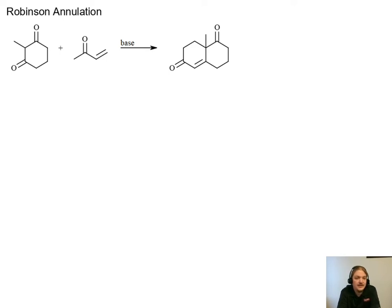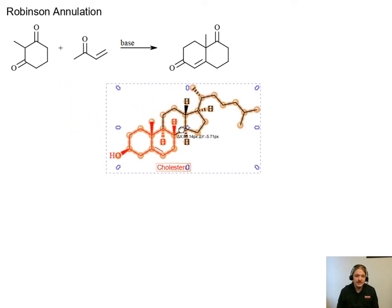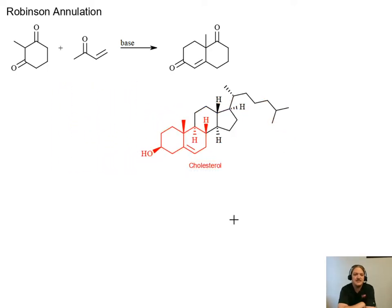This is a reaction that combines an aldol condensation and a Michael addition reaction. And it is used typically to put together bicyclic structures like the product you see on the right. And this particular diketone is actually a really important compound because it is structurally similar to part of this typical steroid carbon skeleton.